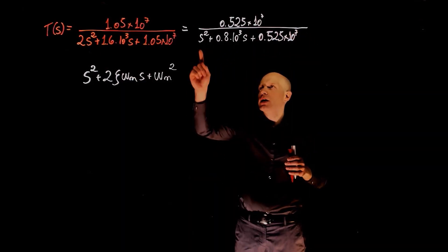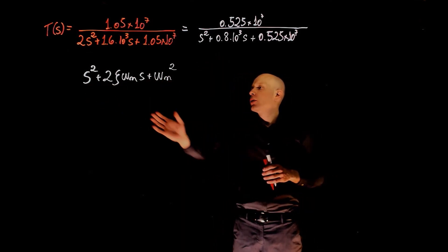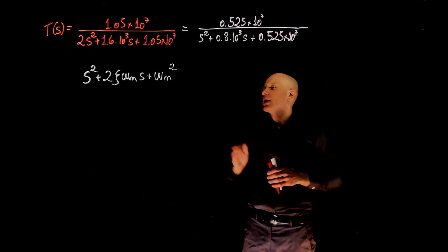Now that we have the same coefficients for s squared in the standard form and the transfer function, we can equate the other terms to find omega n and zeta.